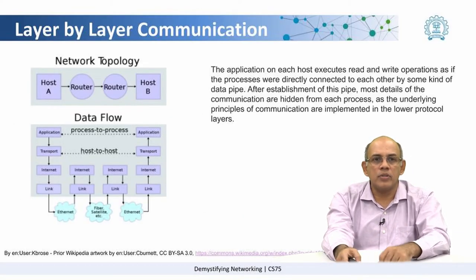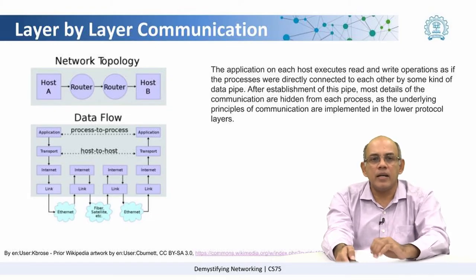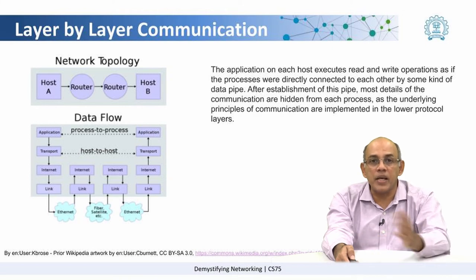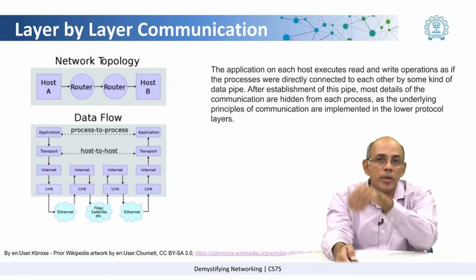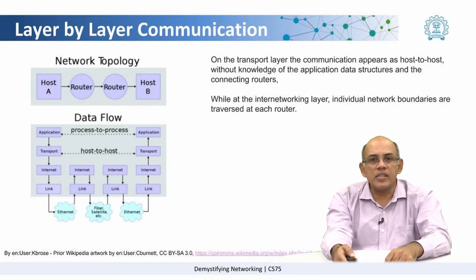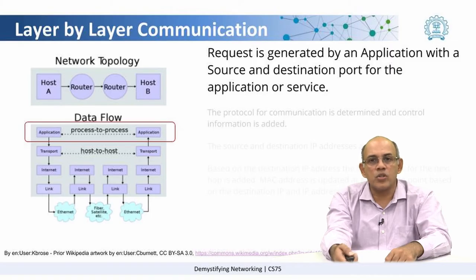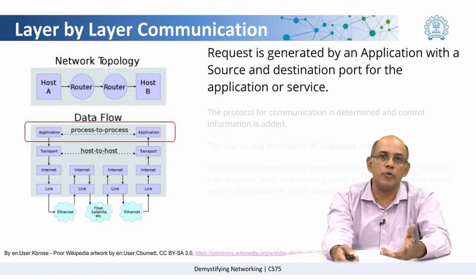Let us start with the top layer. There is Host A, there are a couple of routers on the way, and there is Host B which need to communicate with each other. At each layer, it appears that the layer is communicating with its peer entity at the other side, whereas actually the packet is going down the network, coming up into the routers, going back down and then coming up at the other end. When the request is generated by the application with a source and destination port, it appears that the application layer is communicating with the application layer at the other end — it is a process-to-process communication.